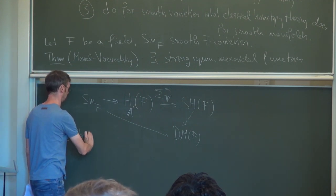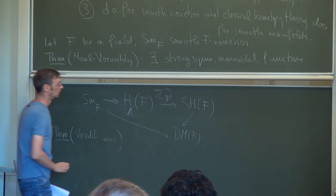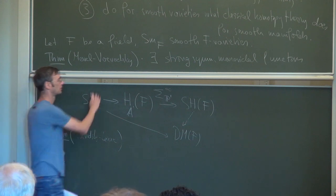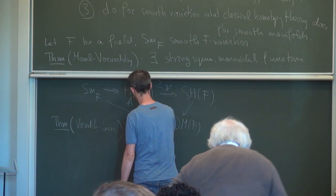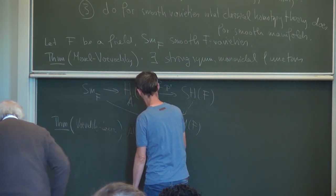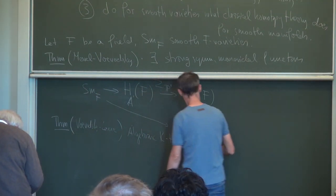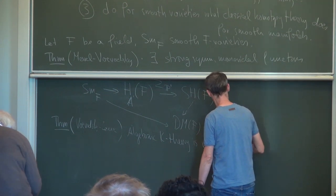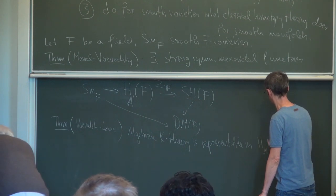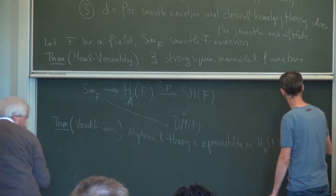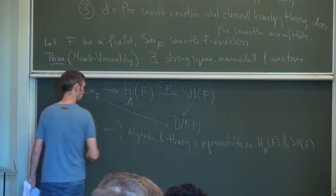There's the following theorem, which I'd like to attribute to Voevodsky and Marc Levine. This says that algebraic K-theory is representable both in the A1 homotopy category and in the stable homotopy category. And moreover,